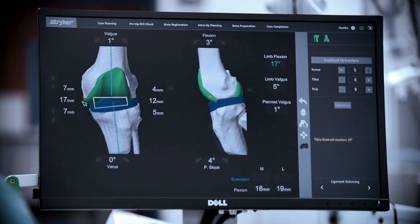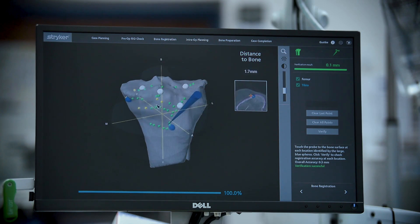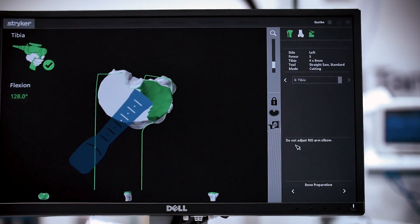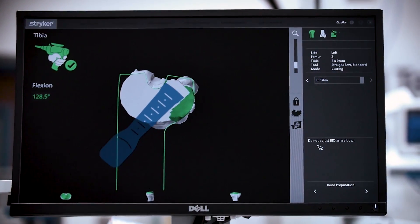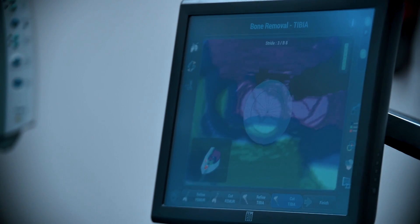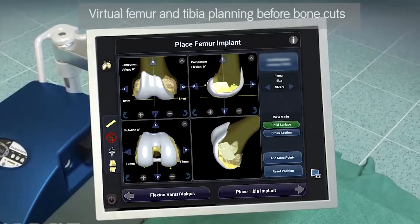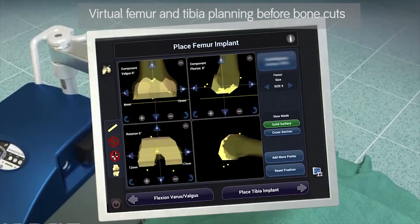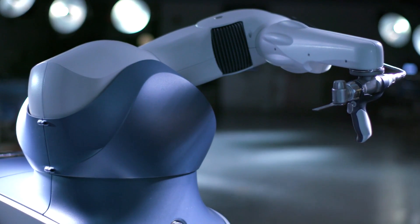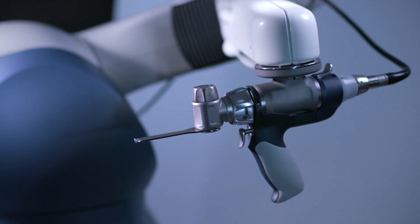The way the robotic assisted procedure works is we use special equipment to essentially map out the patient's anatomy of their knee joint and then use the map and robotic assisted technology to prepare the bone for the instrumentation of the implants.